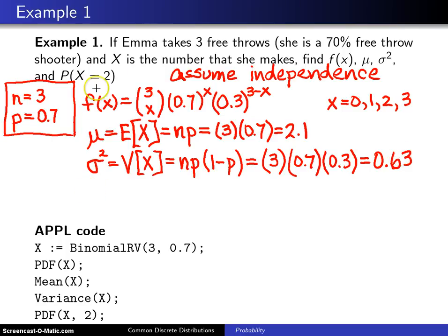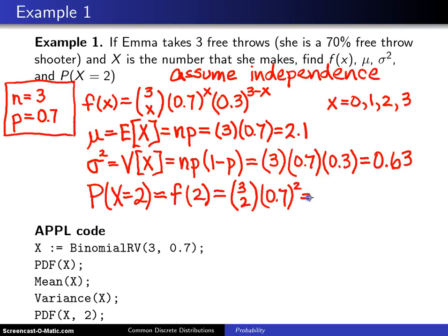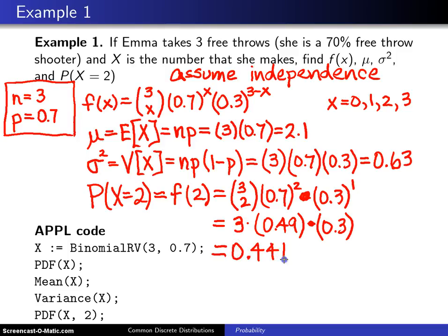Finally, the last thing we're looking for is the probability that the random variable x will take on the value 2, and in this particular case, that will be the probability mass function evaluated at 2. And when you plug into the probability mass function, you will get 3 choose 2 times 0.7 squared times 0.3 to the first power. So 3 choose 2 is equal to 3. 0.7 squared is 0.49, and that gets multiplied by 0.3. And when you work that out, you get 0.441 is the probability of making exactly 2 of the free throws.